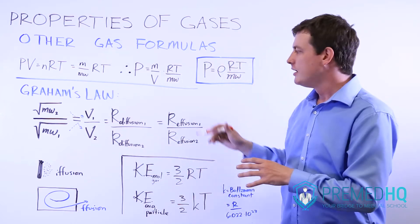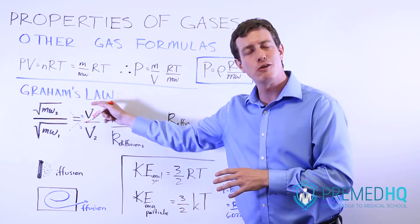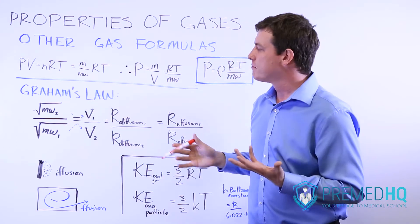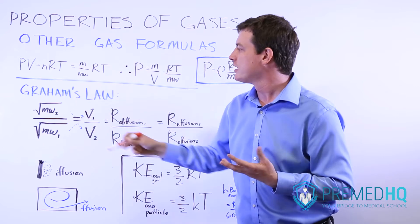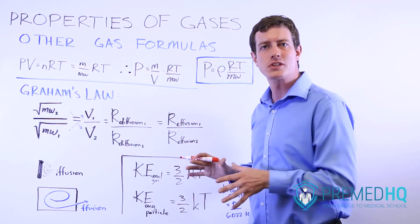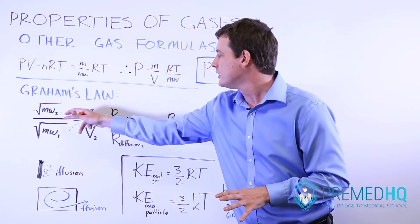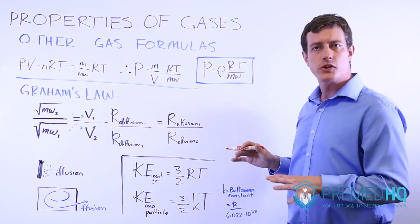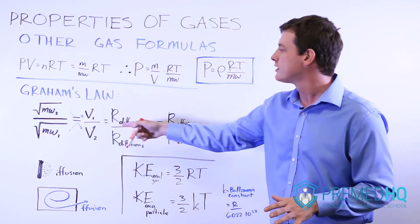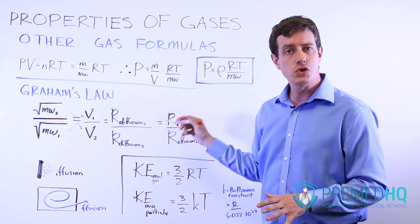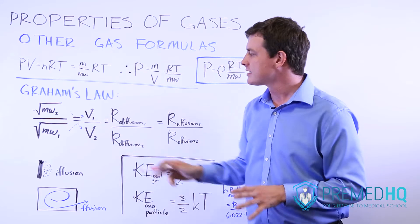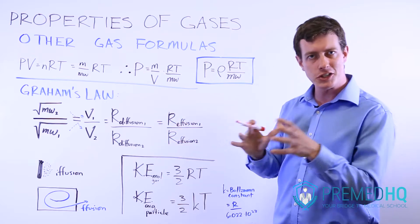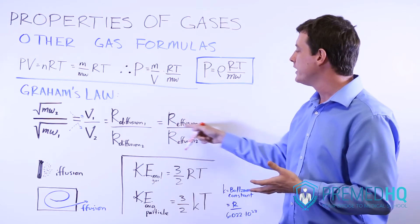Remember this involves a square root, so you'll often encounter compounds with nice squared molecular weights like 16 or 25. The square root of molecular weight is inversely proportional to the velocity of those particles, and it's also inversely proportional to the rate of diffusion. So when comparing two gases, look at the square roots of their molecular weights to find the ratio of their diffusion rates.